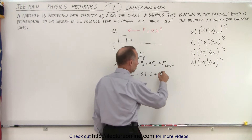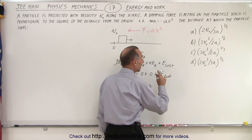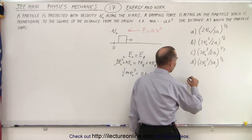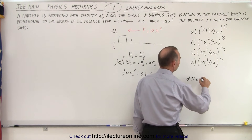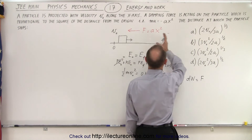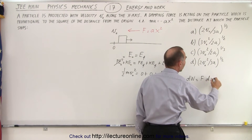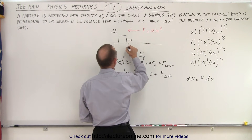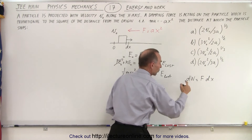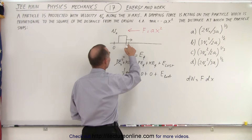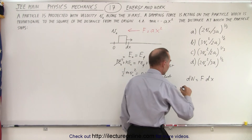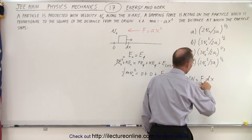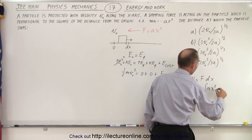How do we find the energy lost? The energy lost equals the work done to overcome that force. A small amount of work done, dW, equals the force at any point along the path times the small distance traveled, dx. So if I travel over small distance dx, I do a small amount of work dW, and the force at that point is defined by Ax squared.